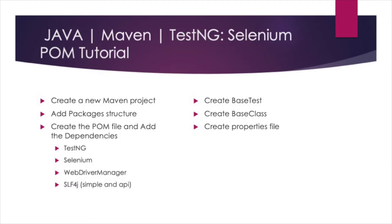So to successfully create a Selenium POM object using Maven and TestNG there are a few things we need to do. The first thing we need to do will be to create a new Maven project. Then we will need to add the package structure for our framework. Next we will create the POM file and add the dependencies. Once that's created we will create the base test, then we will create the base class, and finally create a properties file.